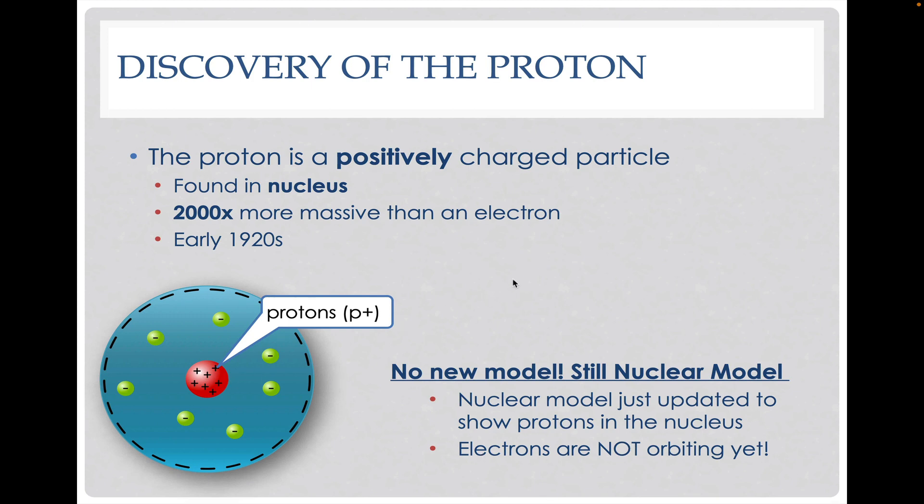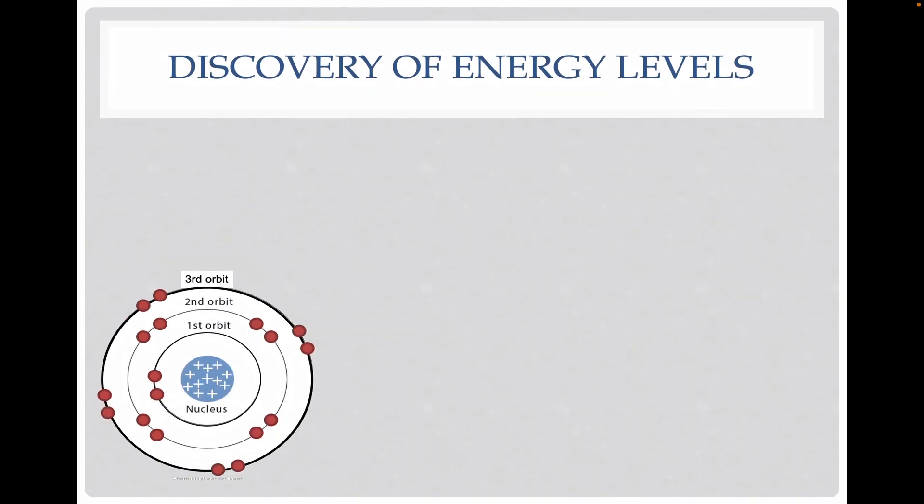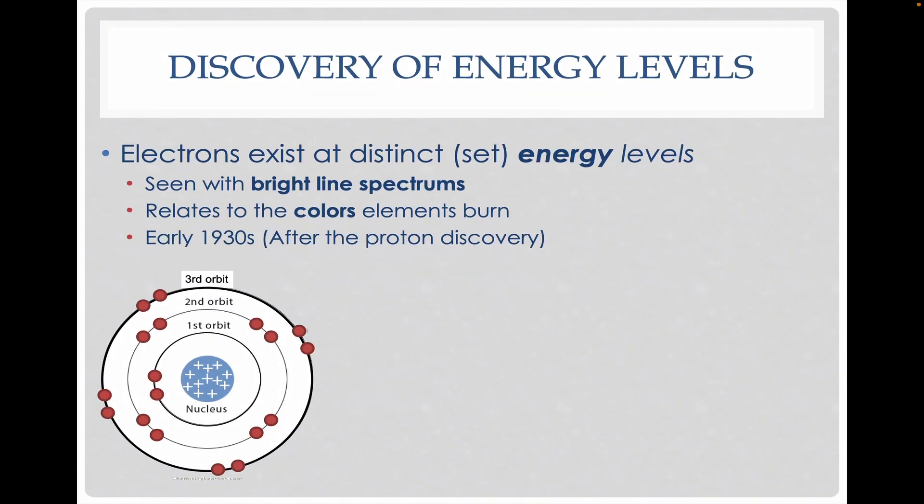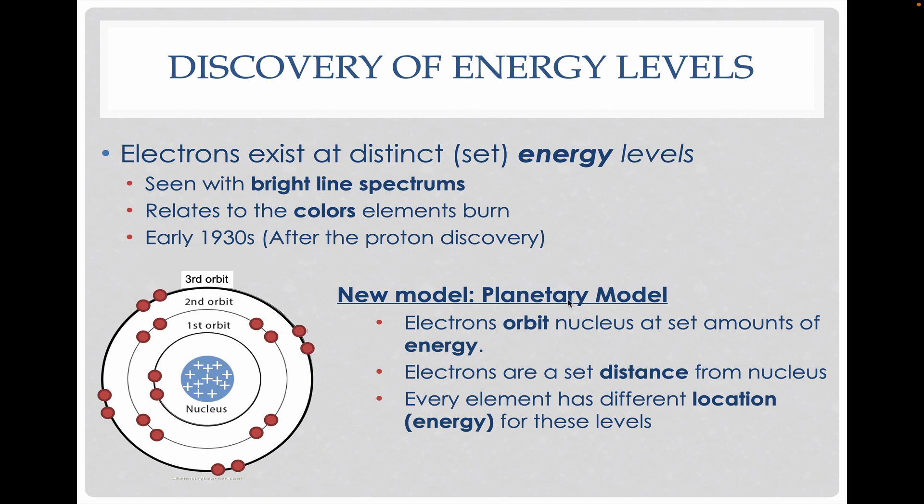Also worth noting, the electrons are not orbiting yet here. They are there, but we do not know about orbits yet. Then we were able to discover the energy levels. This brings us to the planetary model, which is our most commonly visualized model today. We now know that the electrons are at set energy levels. We were able to see that through a thing called bright line spectrums, which we talked more about in class. We have these different energy levels. From this planetary model, we now have electrons orbiting at set energy levels and we have these different locations that we can find electrons.